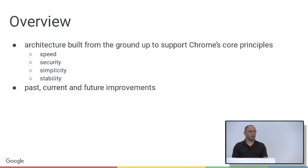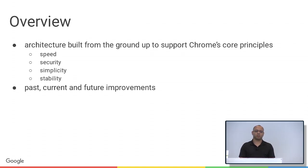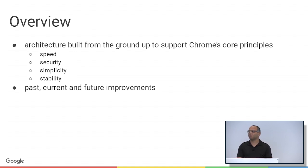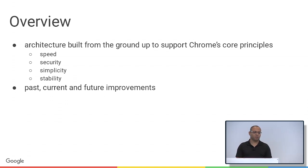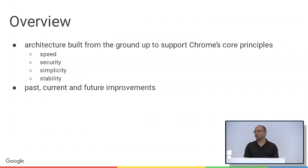I'm going to start by giving an overview of Chrome's unique architecture and why it was built to support the four S's. You've heard about these already multiple times: speed, security, stability, and simplicity. You're going to hear about them many times because they're really central to everything that we do. Every time we're trying to figure out how something should be implemented or what the user interface should look like, these are the principles that drive our thinking.